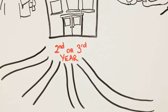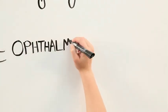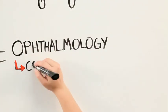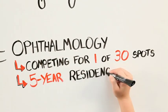Usually towards your second or third year of medical school, you decide in which area you'd like to specialize. If you decide to pursue ophthalmology, you are competing for one of only 30 spots in the country, and you must commit to a five-year residency program.